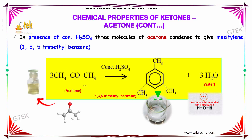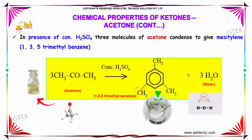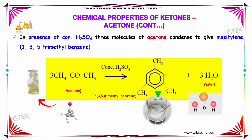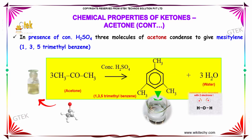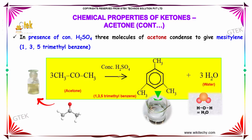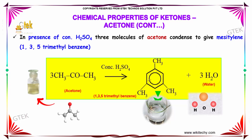In the presence of concentrated hydrochloric acid, three molecules of acetone condense to give mesitylene, that is 1,3,5-trimethylbenzene. When acetone is reacted with concentrated H2SO4, it forms this aromatic compound with water as a byproduct.